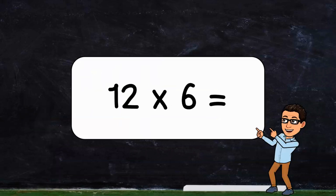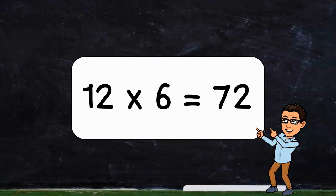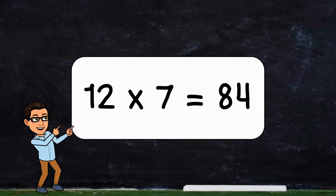12 times 6, 12 times 6 equals 72. 12 times 7, 12 times 7 equals 84.